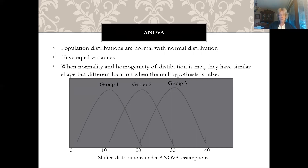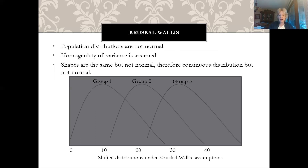When we talk about ANOVA as a parametric test, the population distributions are normal. With normal distribution and equal variance, the assumptions of normality and homogeneity are met, and distributions have similar shape but different locations when the null hypothesis is false. For the Kruskal-Wallis, the population distributions are not normal, so we use Kruskal-Wallis instead.